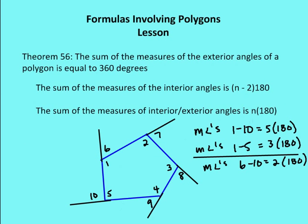Let's talk about the next theorem. The theorem numbers are irrelevant — they're just based on whatever textbook we're looking at. So for those of you listening on YouTube, it doesn't really matter what the number is. The sum of the measures of the exterior angles of a polygon is equal to 360 degrees.